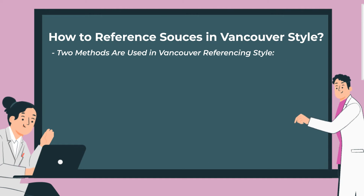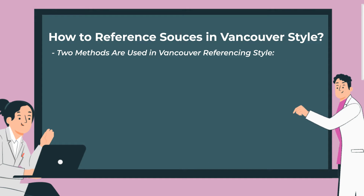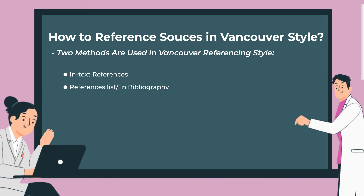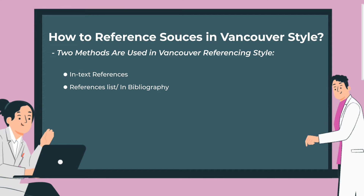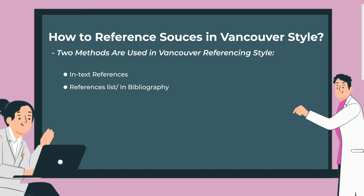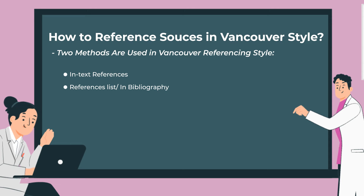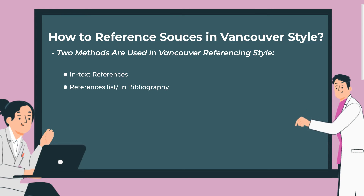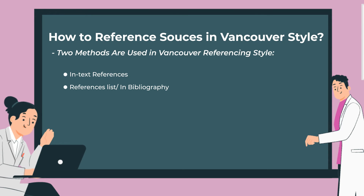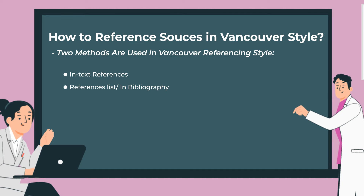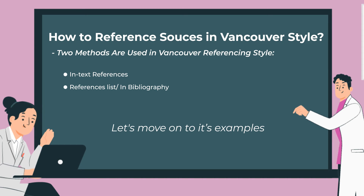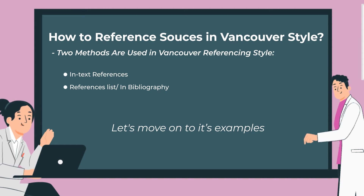Vancouver style referencing can be used in both in-text and reference list formats. Whichever type you choose to incorporate in your assignments, both these types will have a number assigned to each of the citations as they are used. The original number assigned to a citation will be used each time that particular citation appears in the text. Now we will move on to its examples.